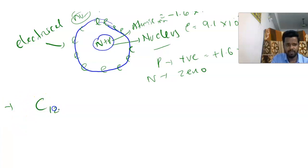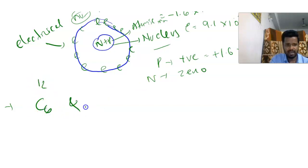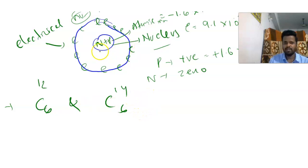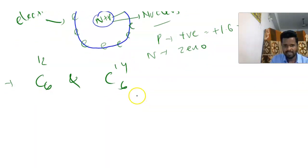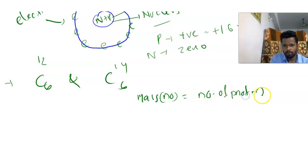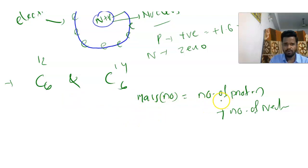Let's take two isotopes of carbon: Carbon-6-12 and Carbon-6-14. Calculate the number of protons, electrons, and neutrons. The formula is: mass number equals number of protons plus number of neutrons. Atomic number equals number of protons equals number of electrons. Carbon has an atomic number of 6.